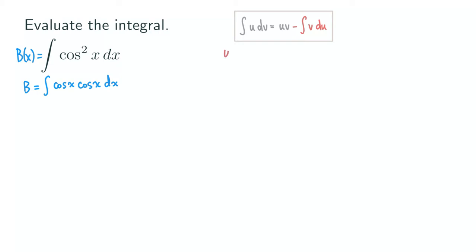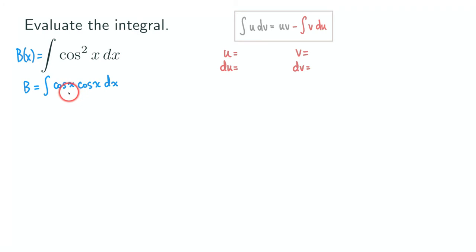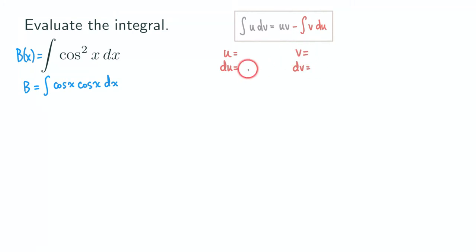So we have u equal to some stuff, v, and then dv. What are we choosing for our u? You don't really have that many choices — you can either let cosine square of x be the whole u, or just let one of them be u. We are going to let u be cosine of x, because it becomes more complicated when you let u be cosine square of x. So let u be cosine of x, which means our dv would be the rest: cosine x times dx.